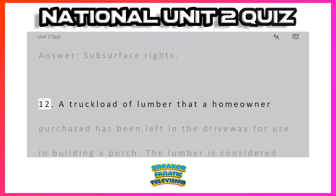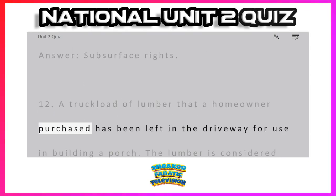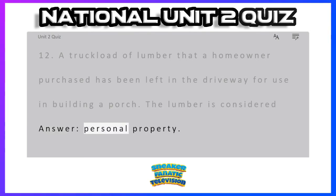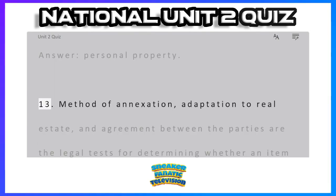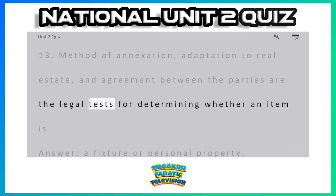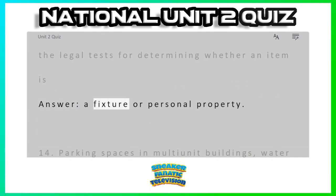Question 12: A truckload of lumber that a homeowner purchased has been left in the driveway for use in building a porch. The lumber is considered — Answer: personal property. Question 13: Method of annexation, adaptation to real estate, and agreement between the parties are the legal tests for determining whether an item is — Answer: a fixture or personal property.